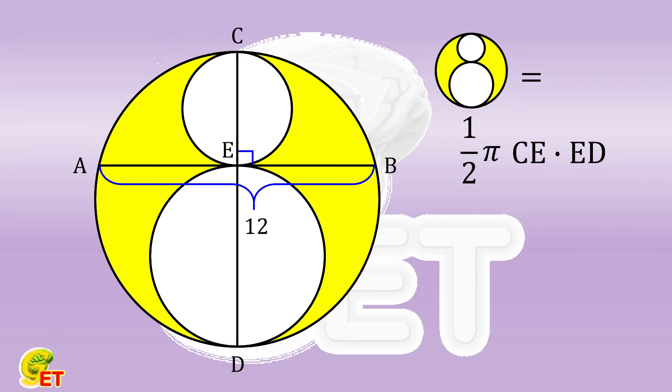What is CE times ED? We connect CA and AD respectively. Since CD is the diameter, CA is perpendicular to AD. So triangle CAE is similar to triangle AED.